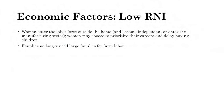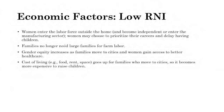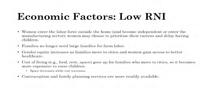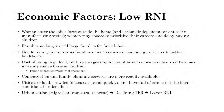As families move to cities and women gain access to better healthcare, gender equity increases. Cost of living rises in cities — more money needed for food and rent, less space, making it more expensive to raise children. Contraceptive and family planning services are more readily available and effective. Cities are crowded — diseases spread quickly and crime rates are higher — not ideal conditions for raising children. Urbanization, the migration from rural to urban areas, leads to declining TFR and declining natural increase rate.